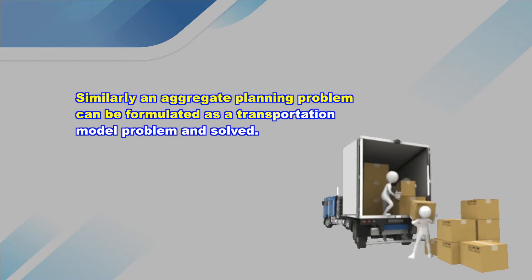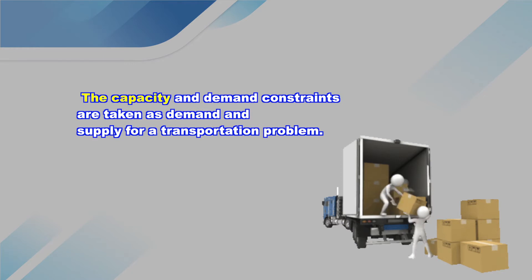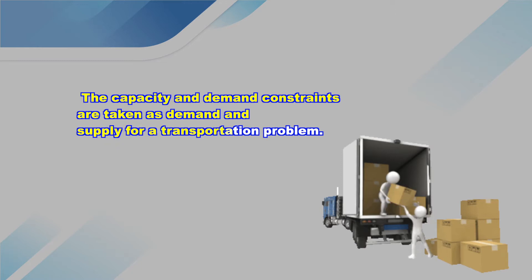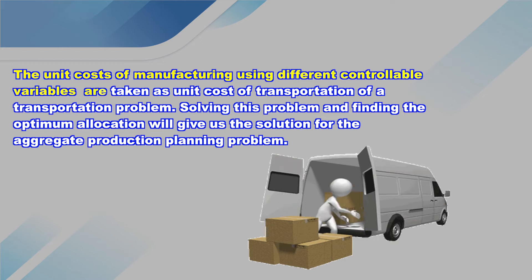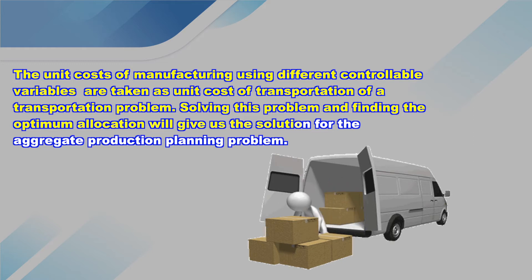Similarly, an aggregate production planning problem can be formulated as a transportation model and solved. The capacity and demand constraints are taken as demand and supply for a transportation problem. The unit cost of manufacturing using different controllable variables is taken as the unit cost of transportation. Solving this problem and finding the optimum allocation gives the solution for the aggregate production problem.